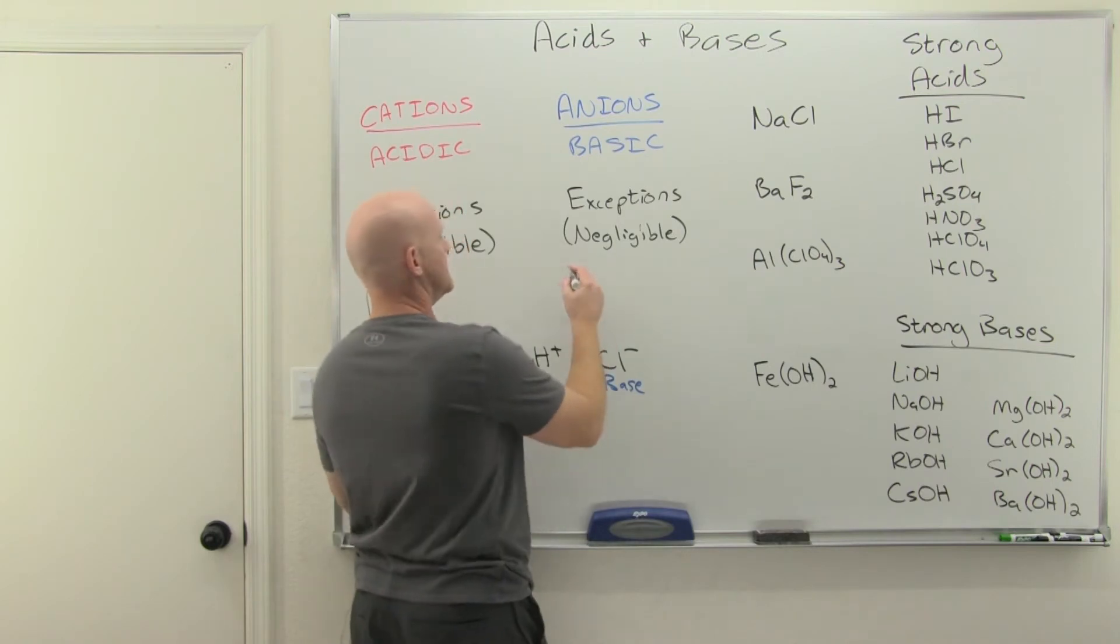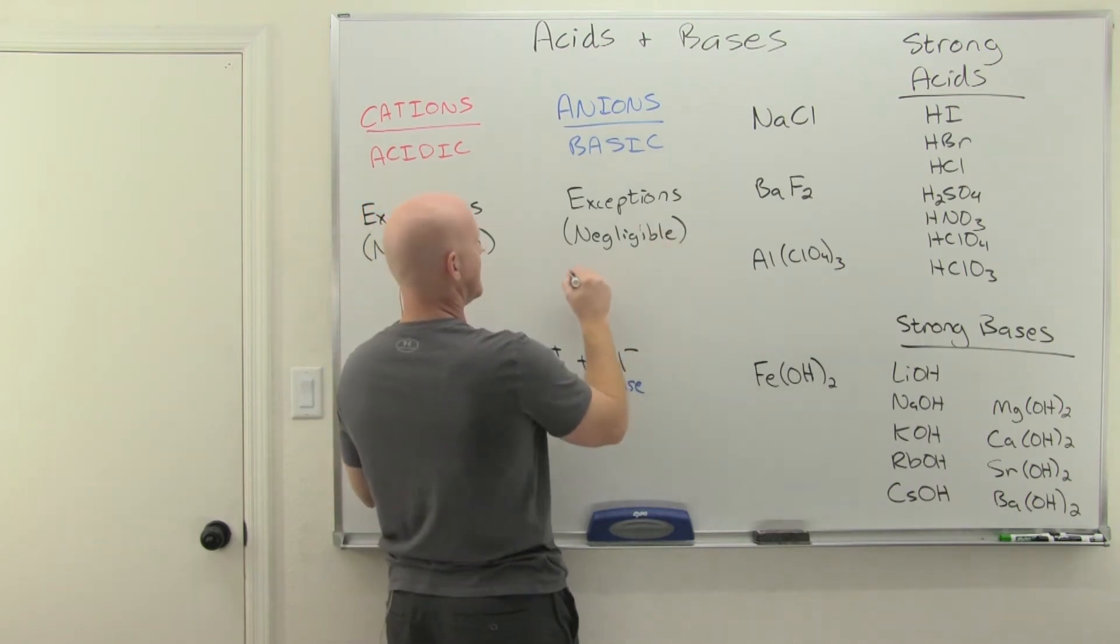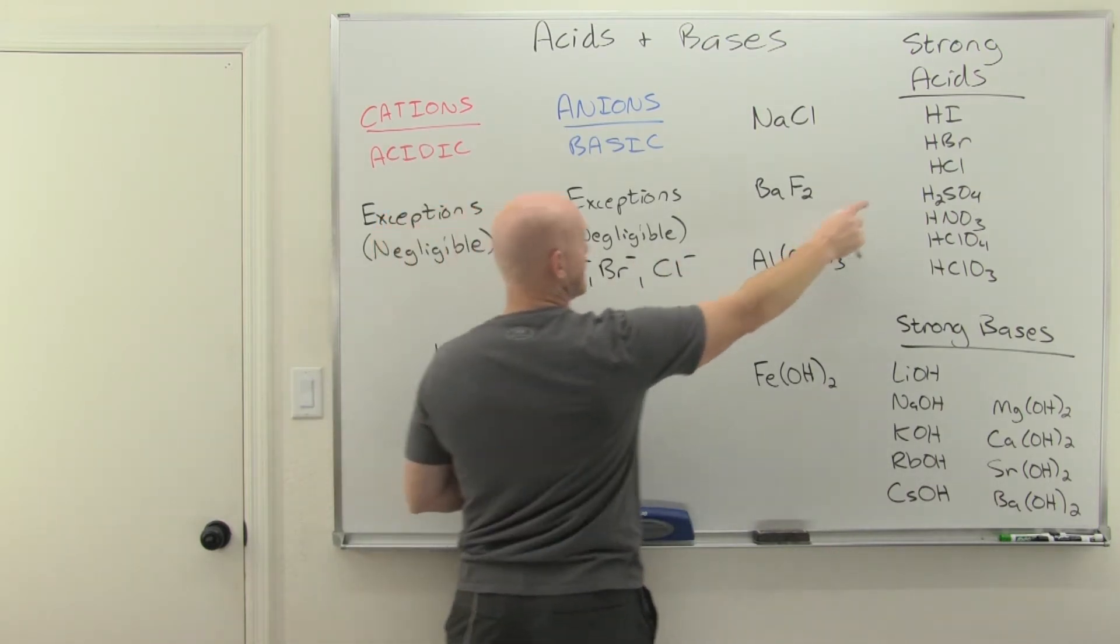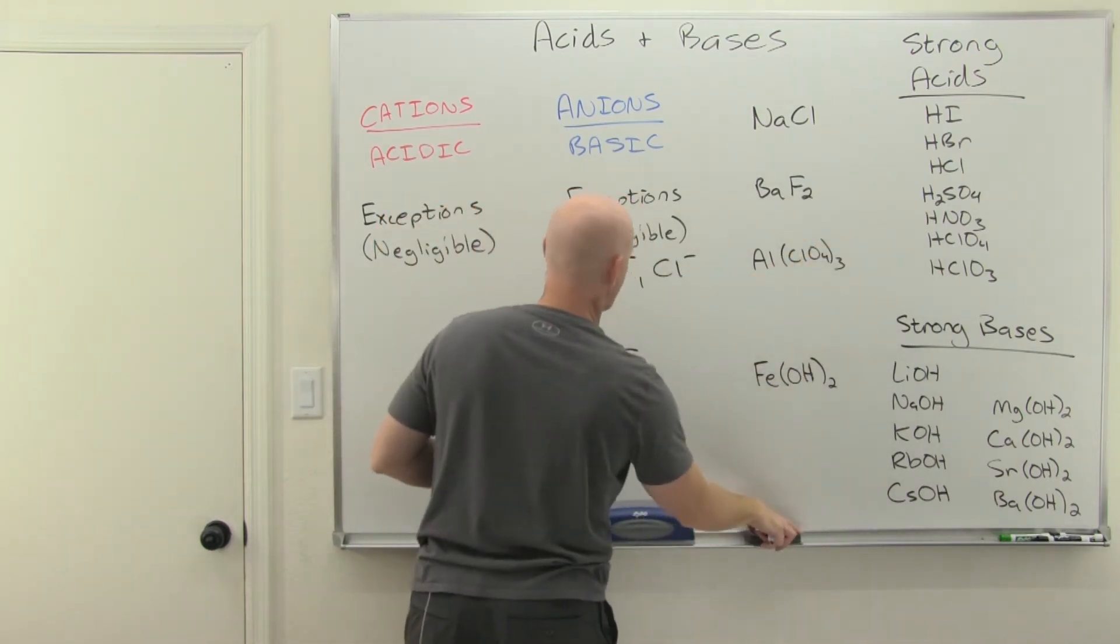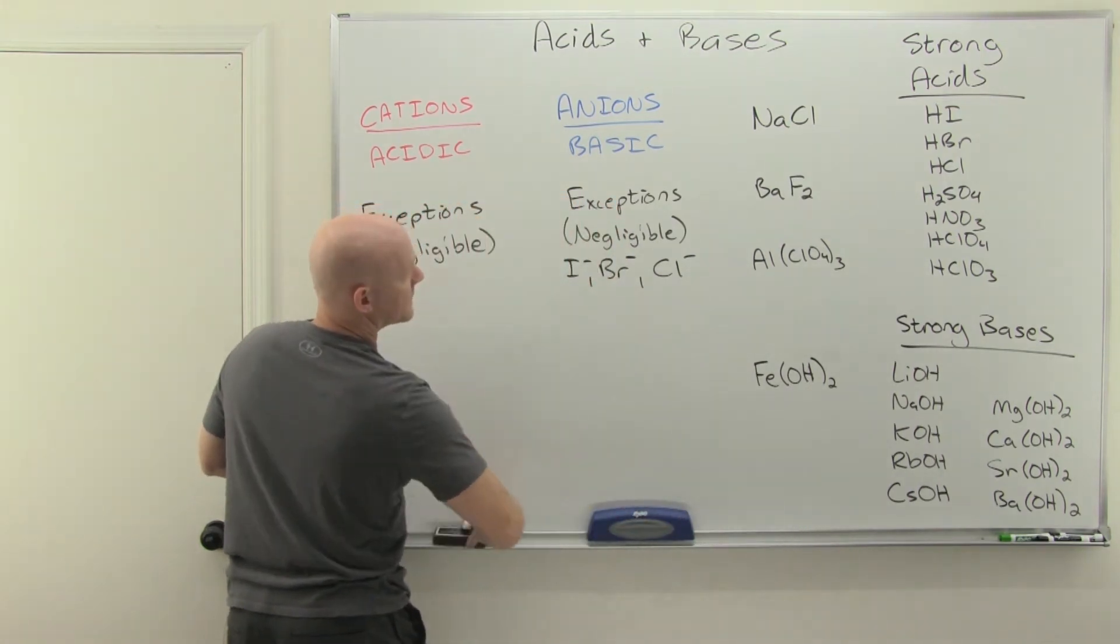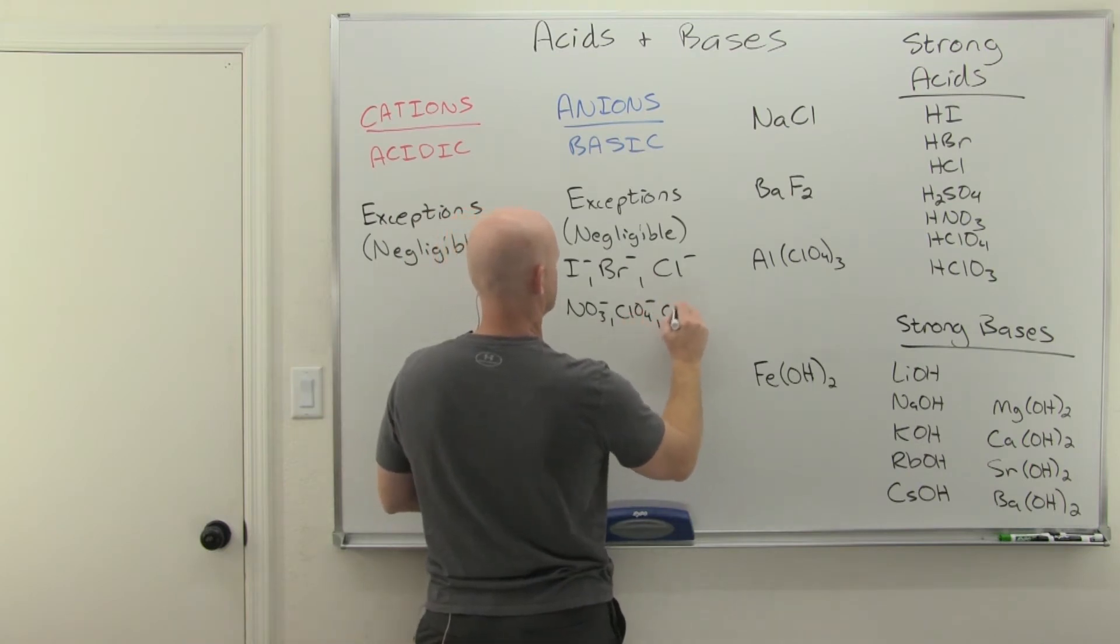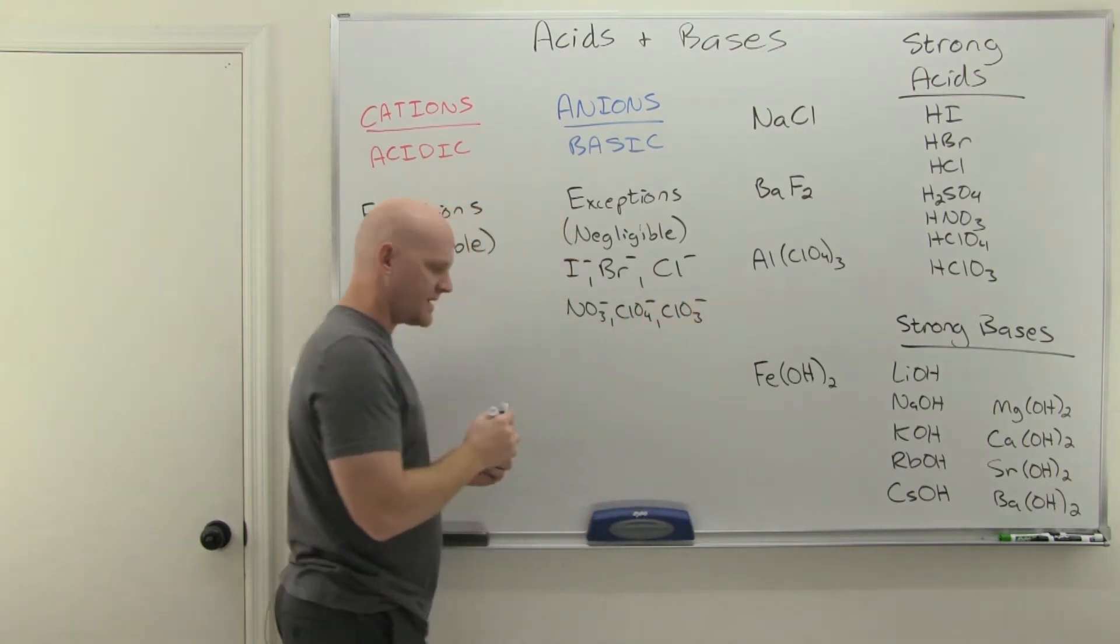Who are the negligible bases? Chloride is definitely one of them. But we've got I-, Br-, Cl-. I'm going to skip H2SO4 for a second. NO3-, ClO4-, ClO3-.